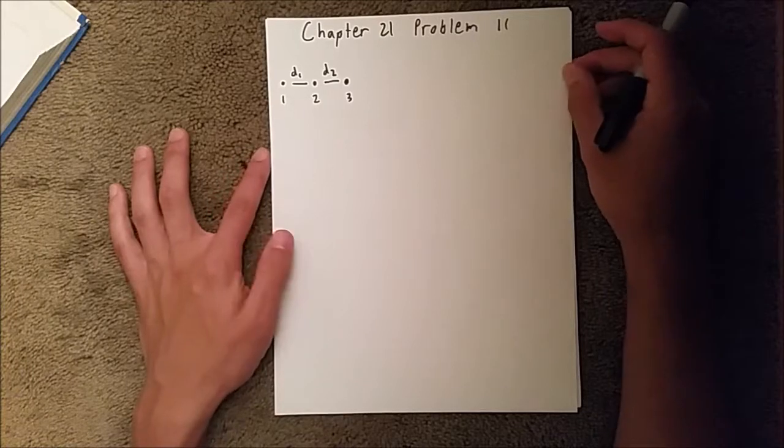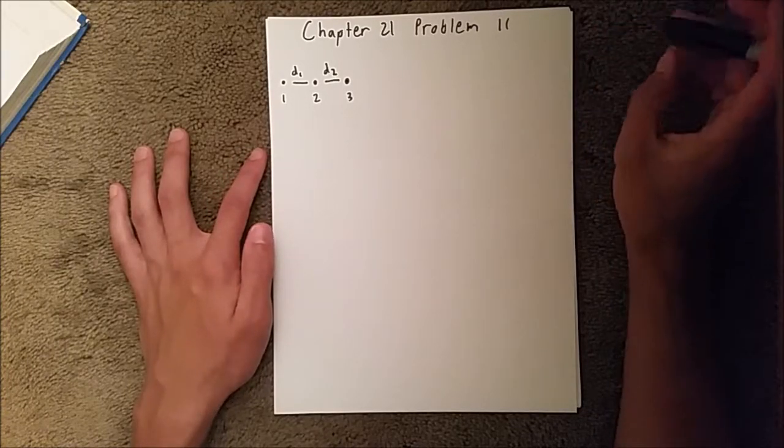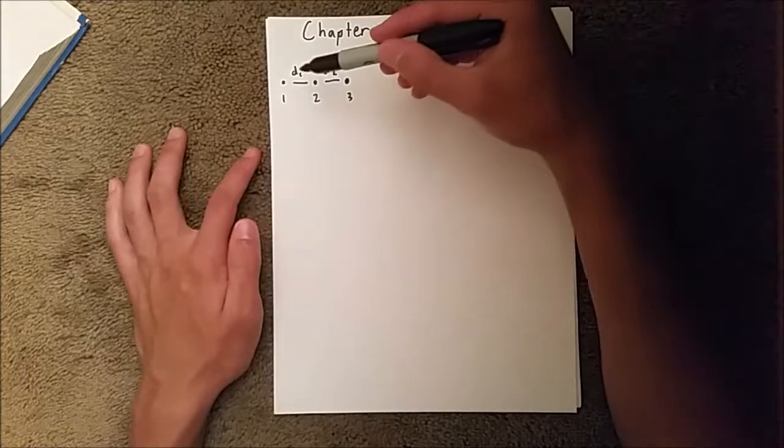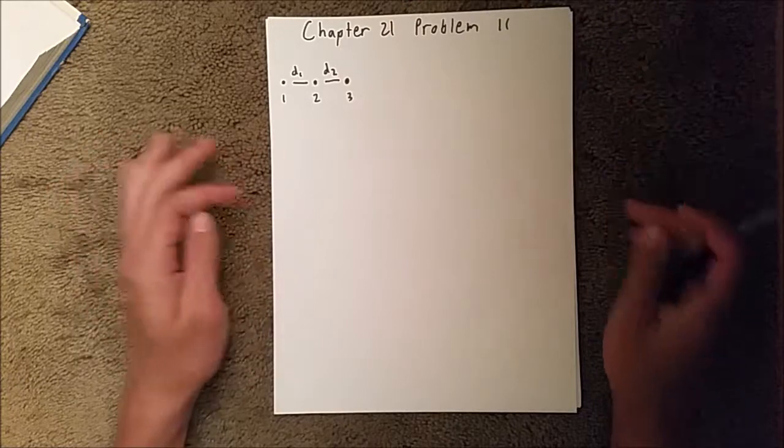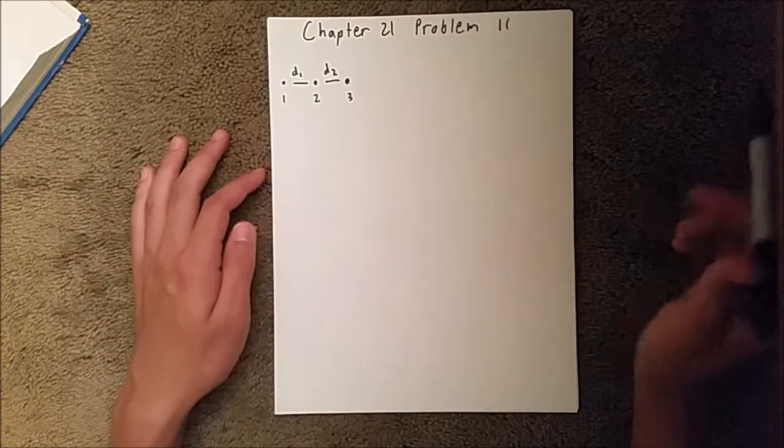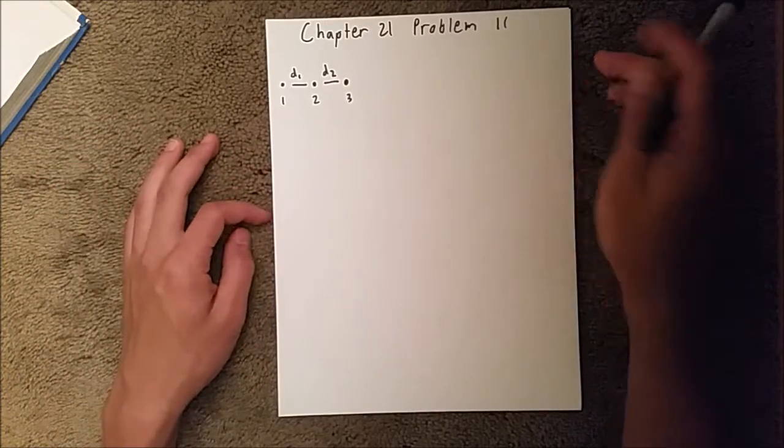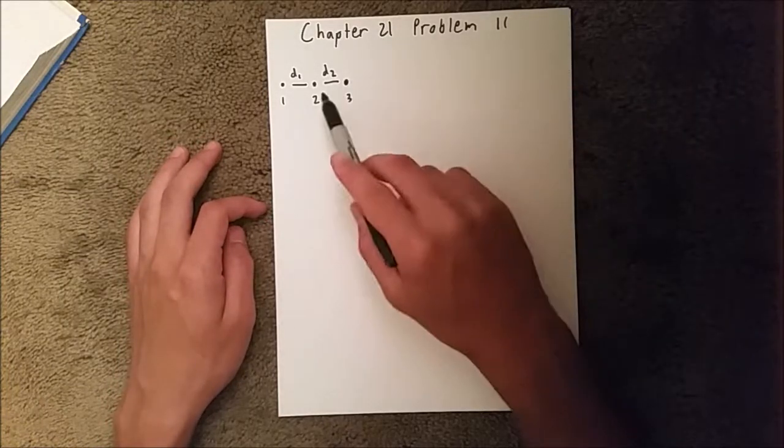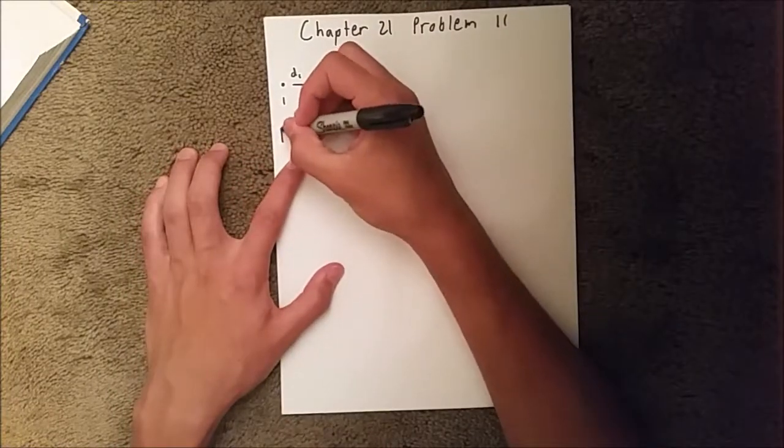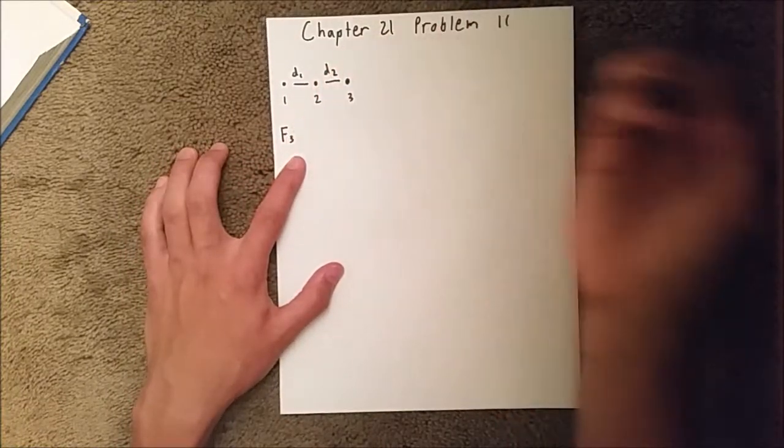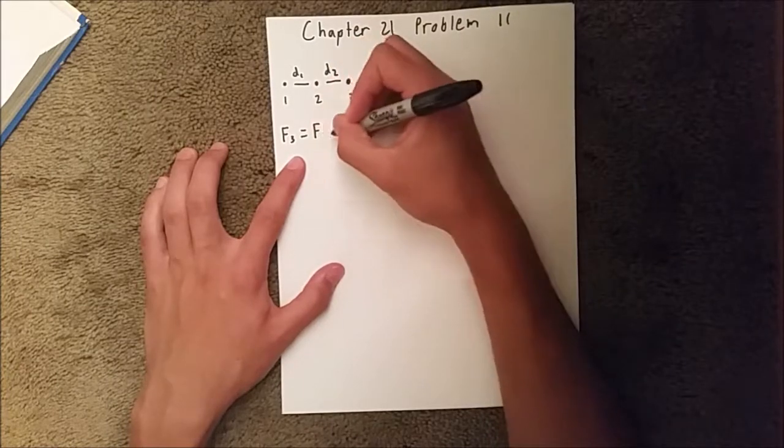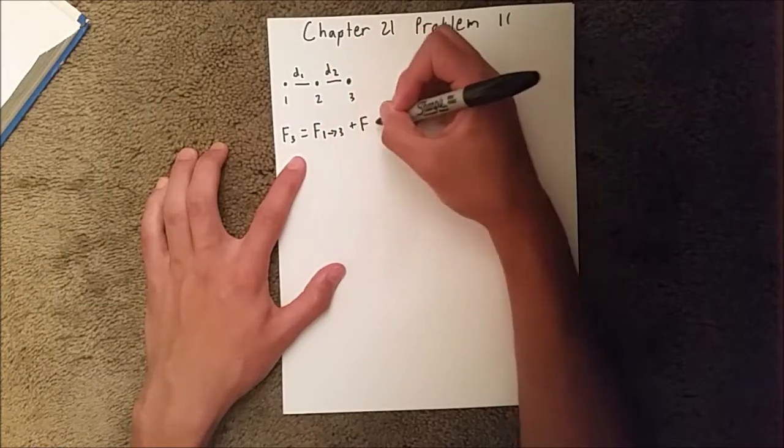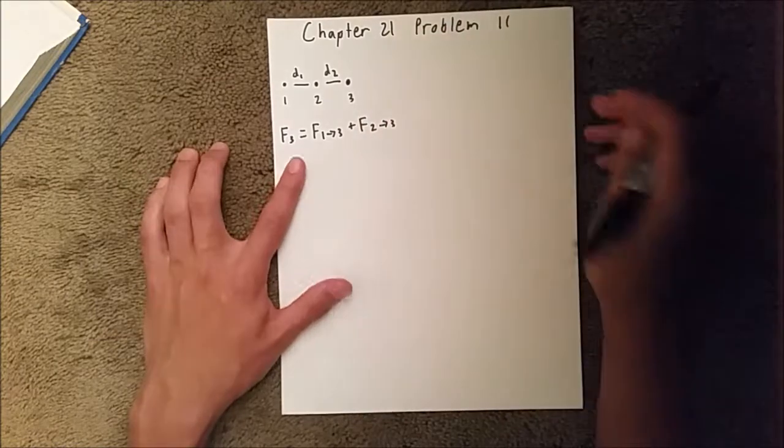So we are asked to find the ratio between charge one and charge two, if these two distances are equal. Since charge three is the one that is able to move freely, we need to find the force that is exerted on that particle by these other two. So, we are going to say force of particle three is equal to the force of particle one on three, plus the force of particle two on three.